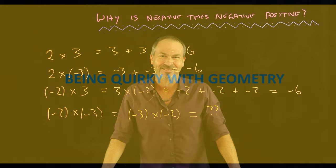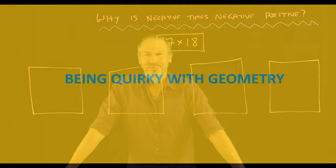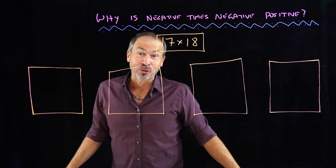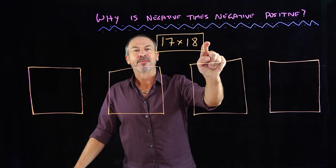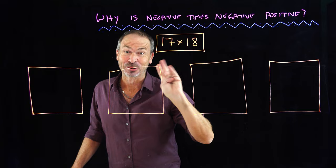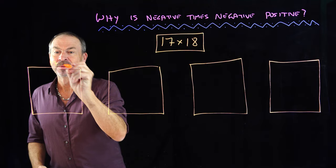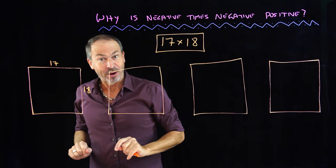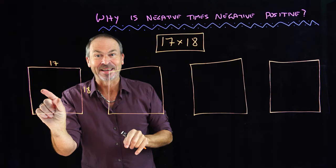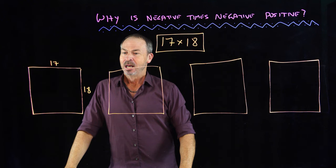Let me give a good argument and then dig into it. I'm going to work out 17 times 18 in four different ways. The first way: think of it as a geometry problem — a rectangle that's 17 units long and 18 units high. The area equals length times height, which is 17 times 18. Working out the area is exactly doing that computation.